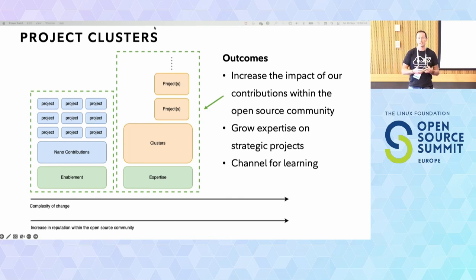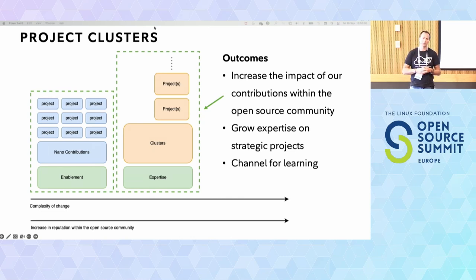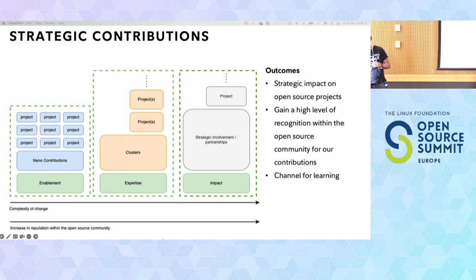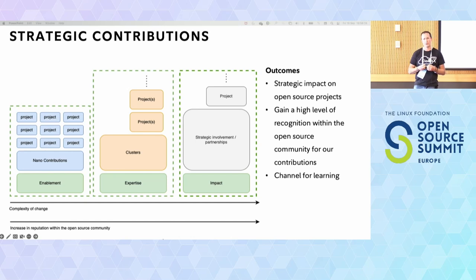The second tier is what we call project clusters. This is about building expertise in certain frameworks and technologies aligned to the platforms we build, allowing us to go deeper in the types of changes we contribute and gain expertise in these projects. The final phase is capitalizing on those previous two - building deep expertise and impact in the community, contributing large features that accelerate the velocity of value on our platforms, grow our reputation in those projects, and align to our platform strategy.